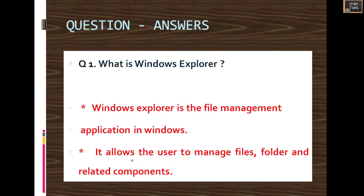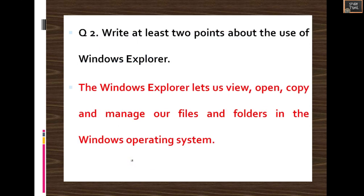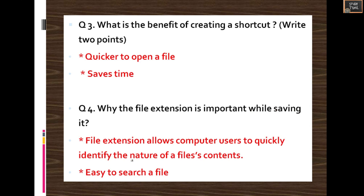Question and Answers: What is Windows Explorer? Windows Explorer is the file management application in Windows. It allows the user to manage files, folders, and related components. Two uses of Windows Explorer: you can view, open, copy, and manage files and folders. What is the benefit of creating a shortcut? It is quicker to open a file and it saves time. Why is file extension important? File extension allows computer users to quickly identify the nature of a file's contents and makes it easy to search a file.